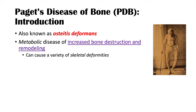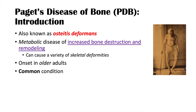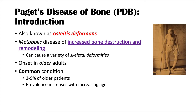You can see in this image this gentleman's legs are deformed. Paget's disease of bone is a condition of older adulthood — its onset typically occurs in adults over the age of 55. It's a relatively common condition; around 2 to 9 percent of older patients can have this condition. It is the second most common bone disease in the elderly.